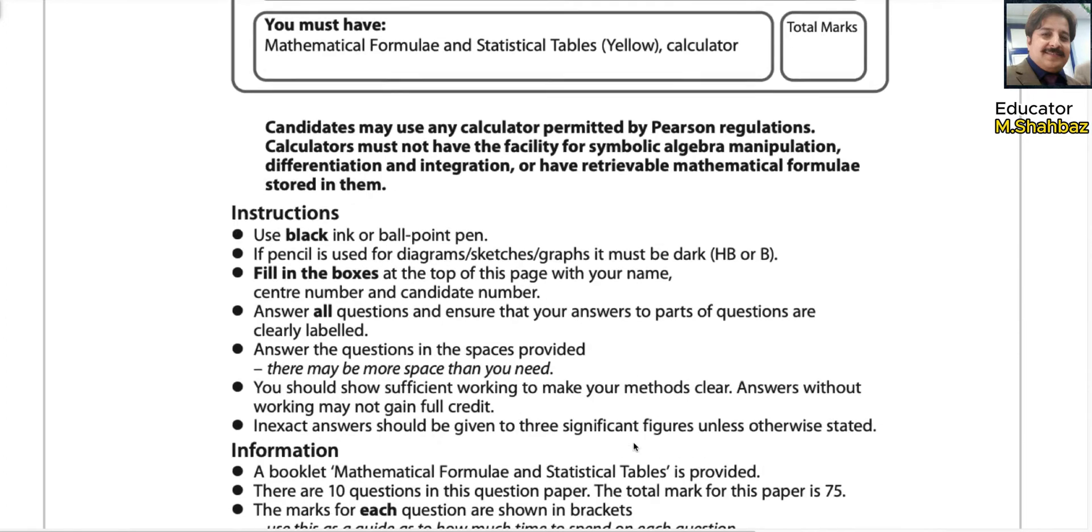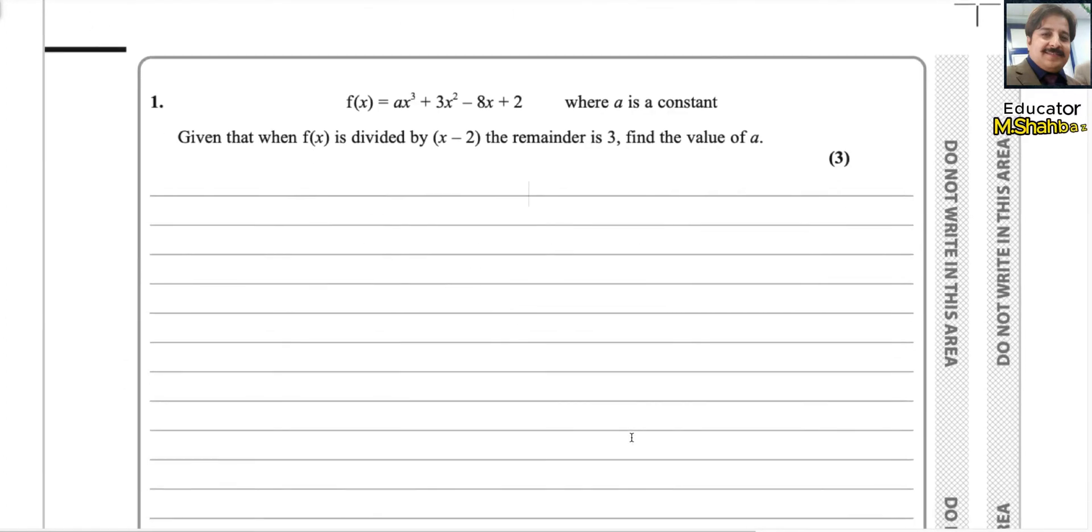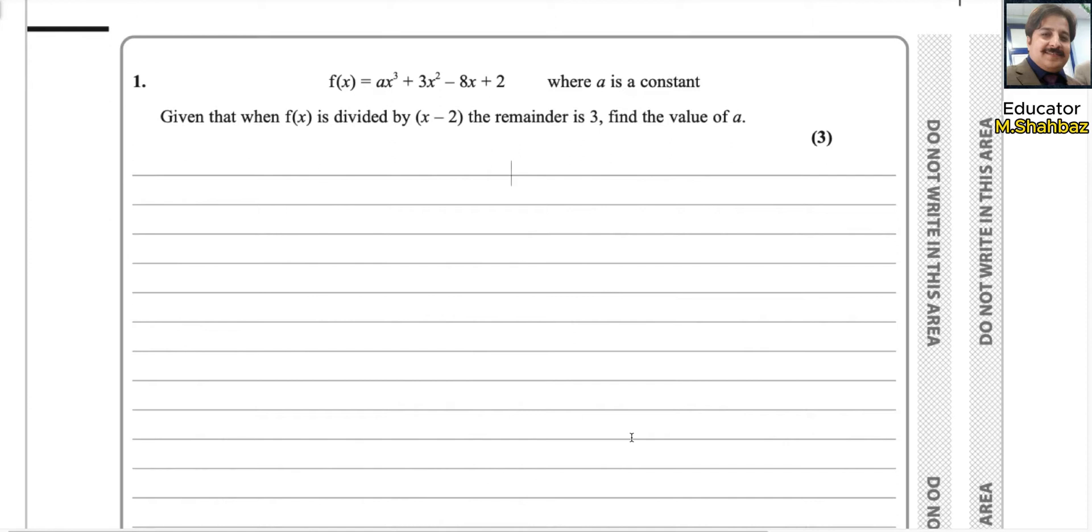Let us start with question number 1. Question number 1 is f(x) equals ax³ plus 3x² minus 8x plus 2, where a is a constant. Given that when f(x) is divided by x minus 2, the remainder is 3. Find the value of a.